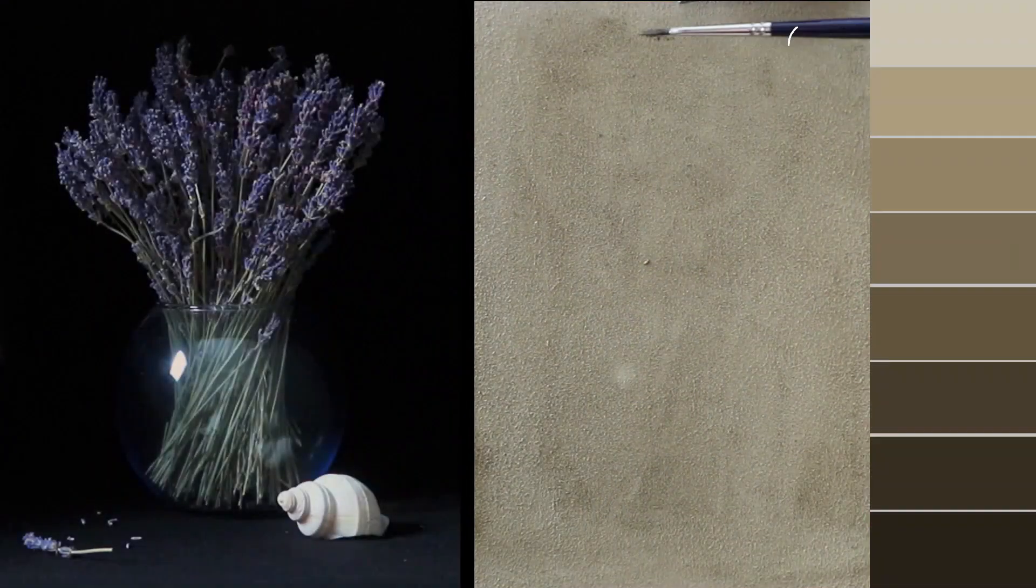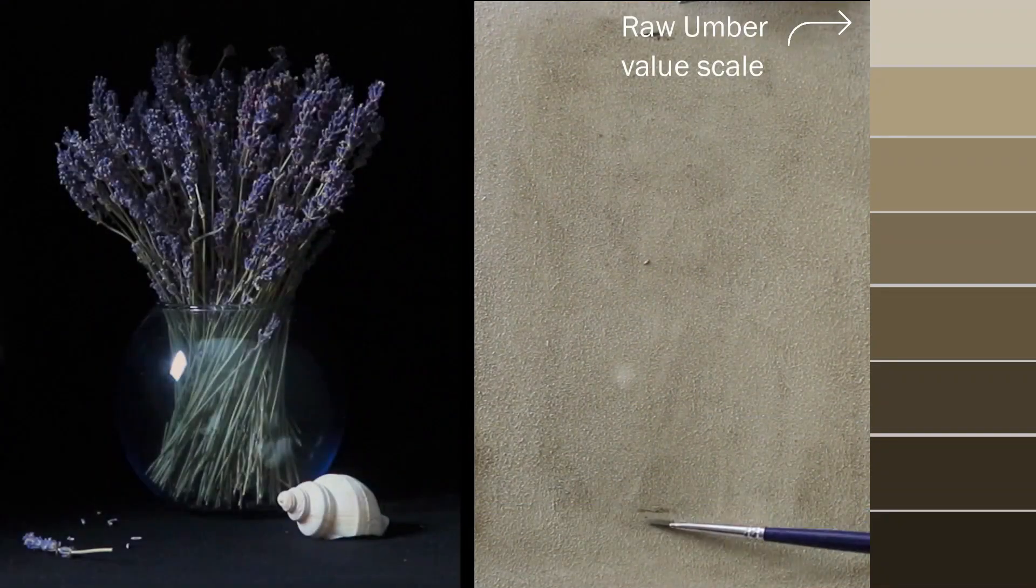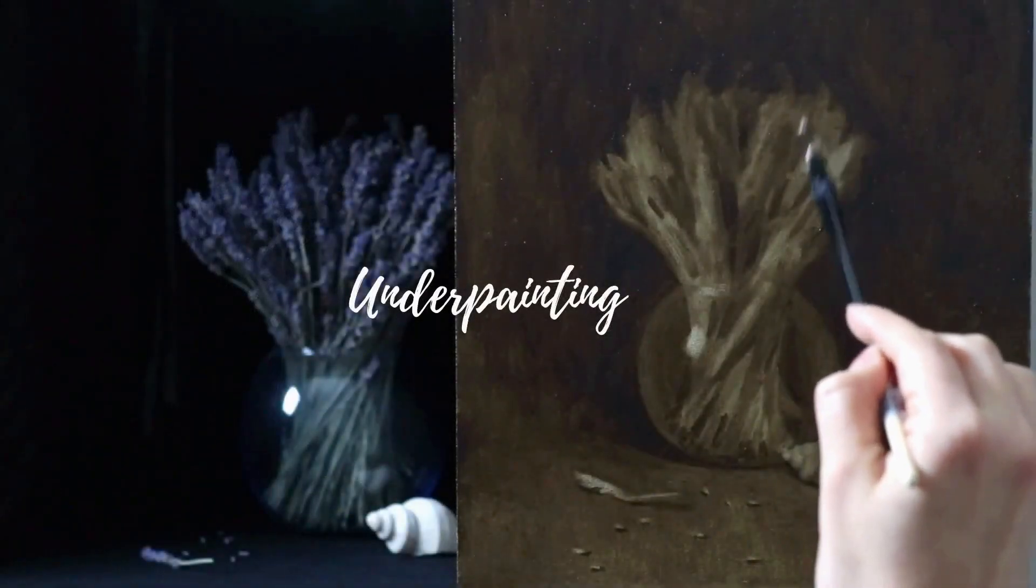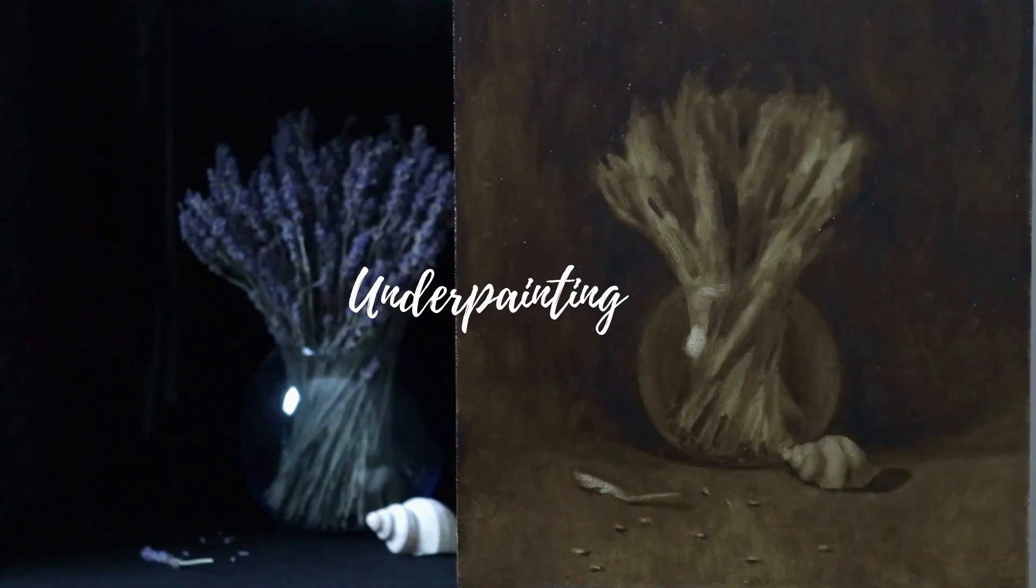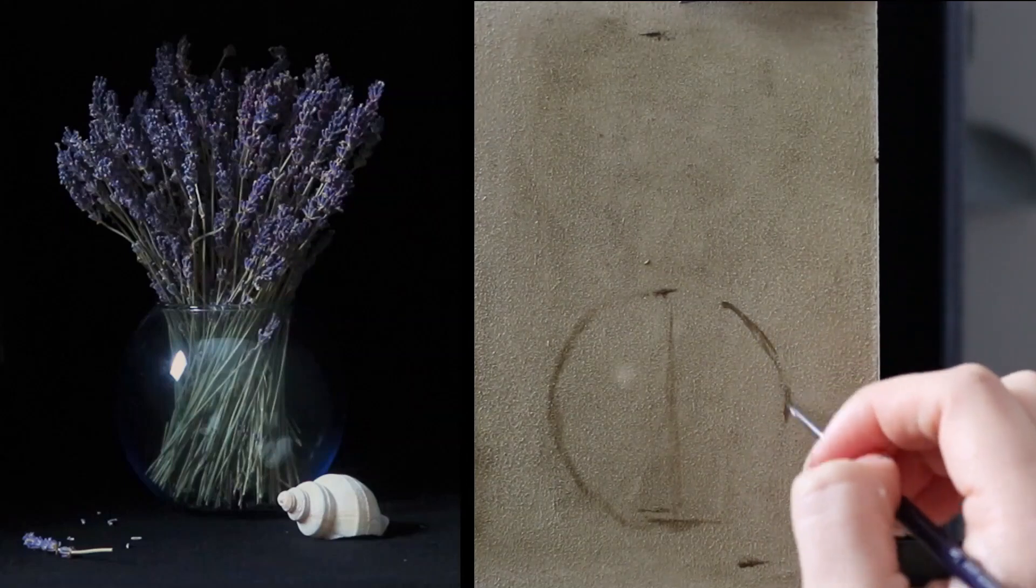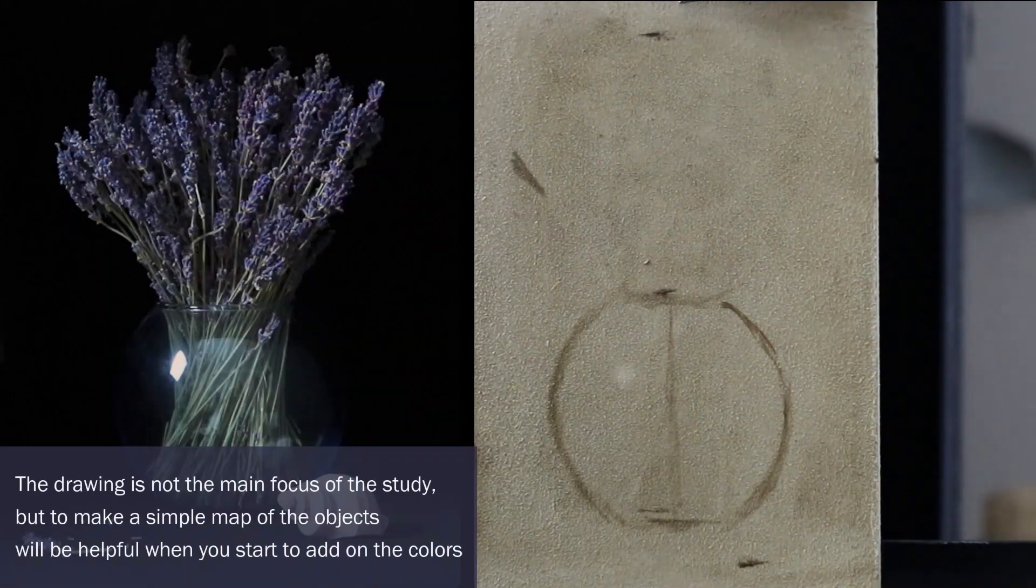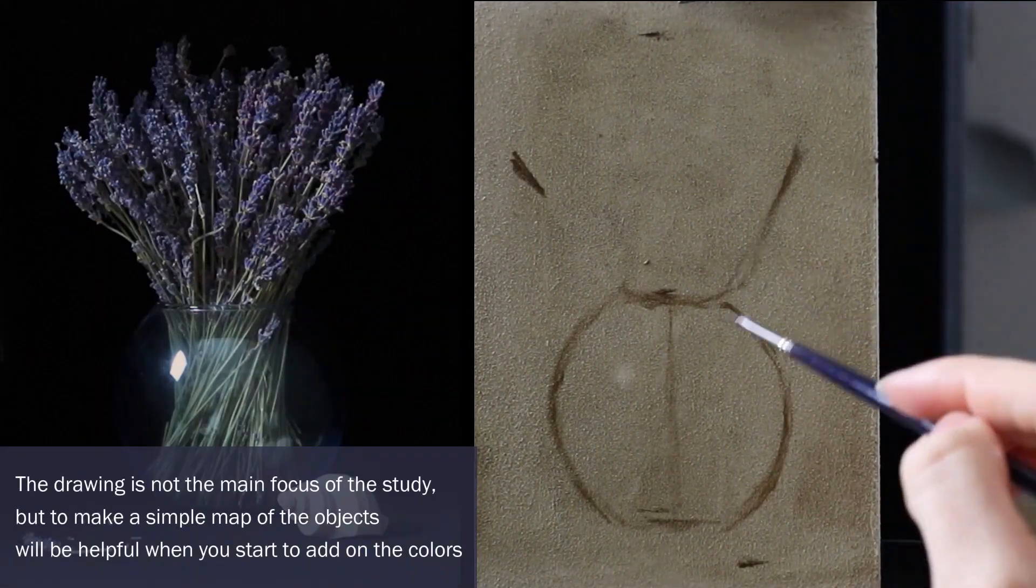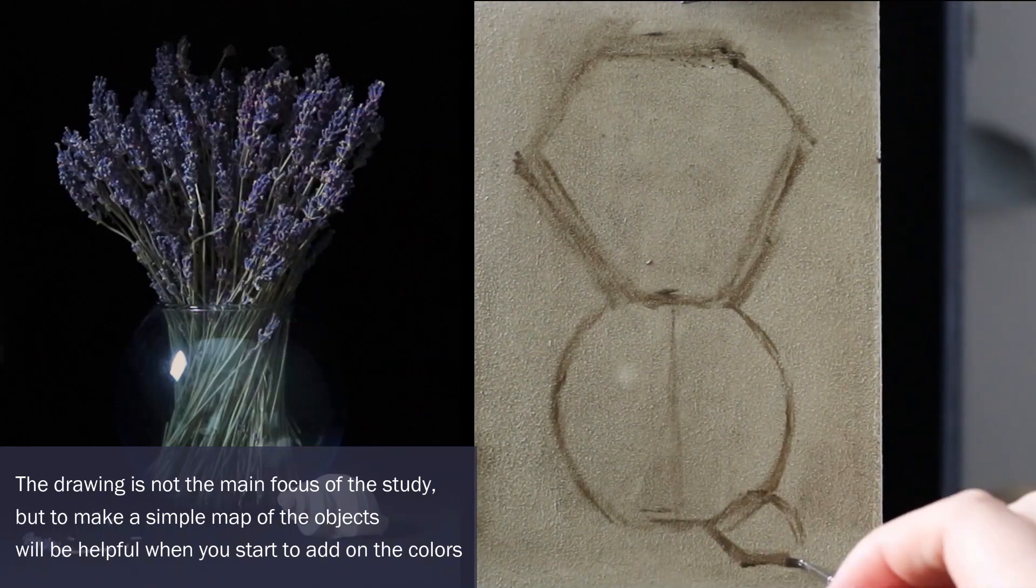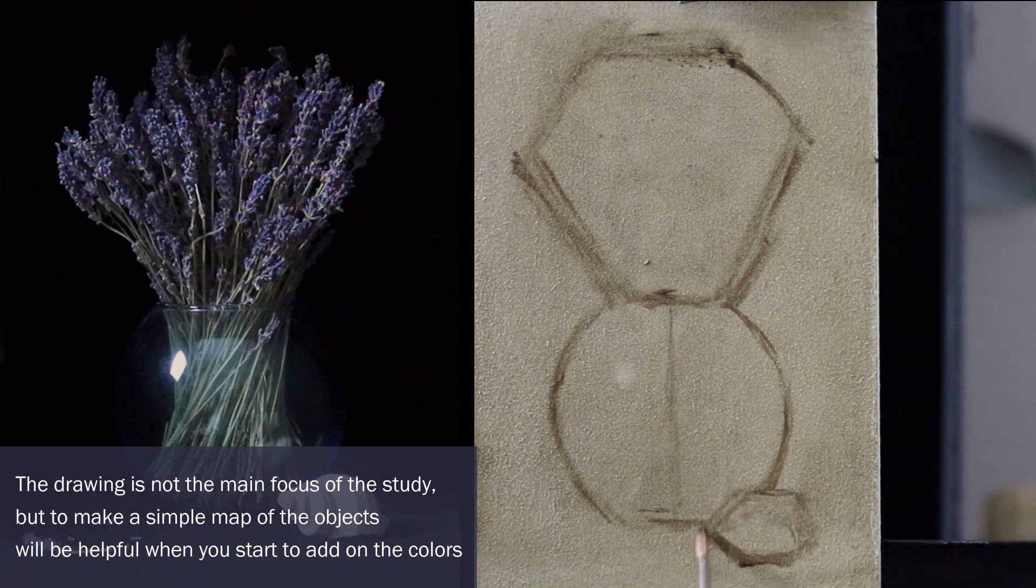The first thing I will do is to make a few marks with a color called raw umber. This is the same pigment that I will use when I make the underpainting for the main painting later on. In my studies I'm generally never super focused or strict with the measurements and the drawing of the objects, but even though the drawing is not my main focus, I like to make a simple map showing where everything is placed before I start adding on the color mixes.